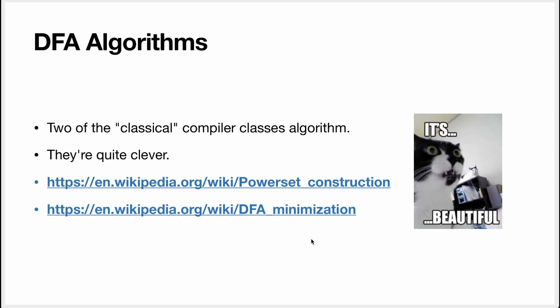So these two algorithms I just presented, power set construction and DFA minimization, these are two classical compiler classes algorithms. They're quite clever. I think they're quite interesting. But I've decided not to show you the code of them because it's, according to me, unlikely that you'll ever need to do that.